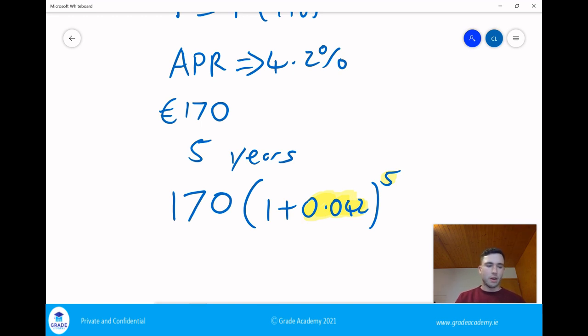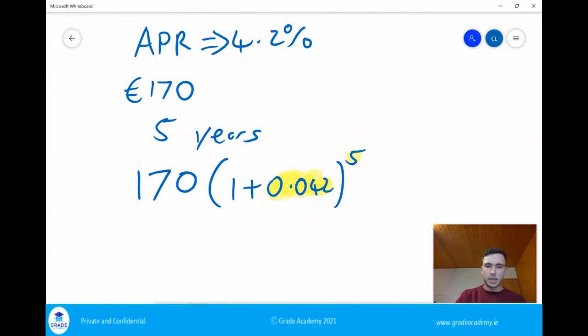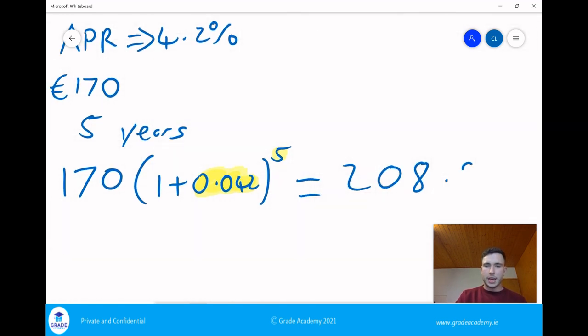Then we can type all that into our calculator and we should get an answer. I'm just going to type that in very quickly. So 170 times 1.042 to the power of five and we end up getting 208 euro and 83 cents.